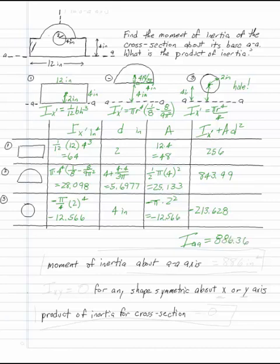Or to three sig figs, I can say that the moment of inertia about the AA axis is 886 inches to the fourth. And that's my answer to the moment of inertia.